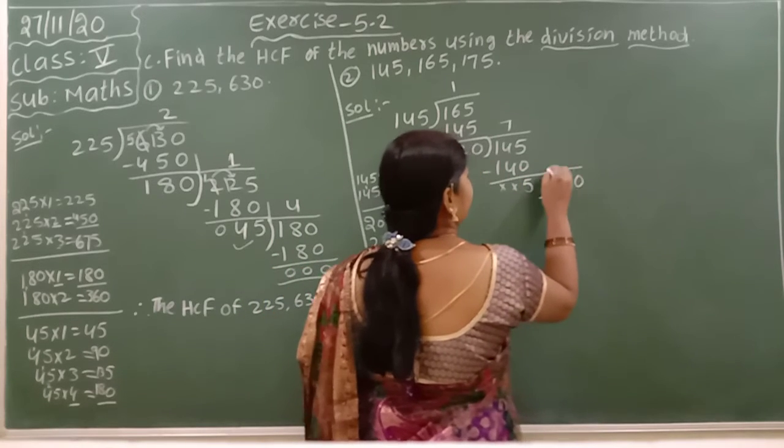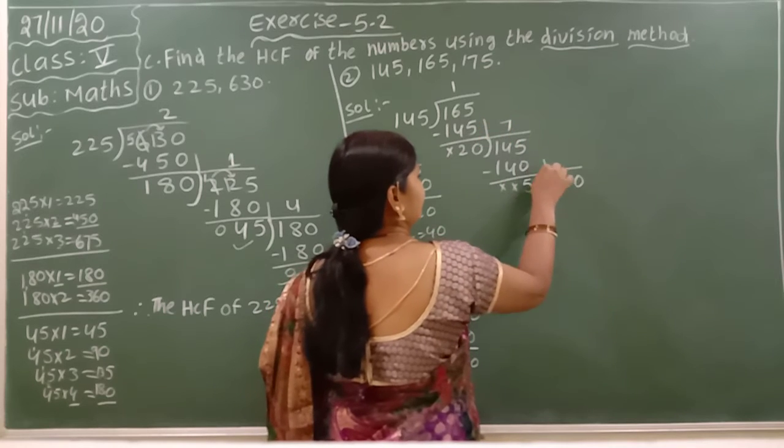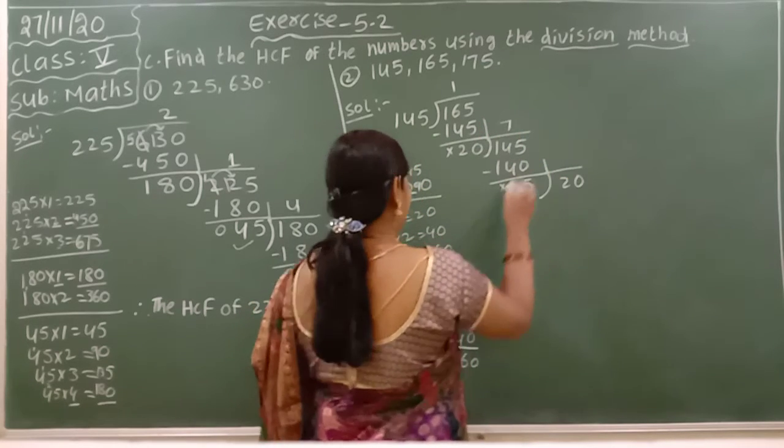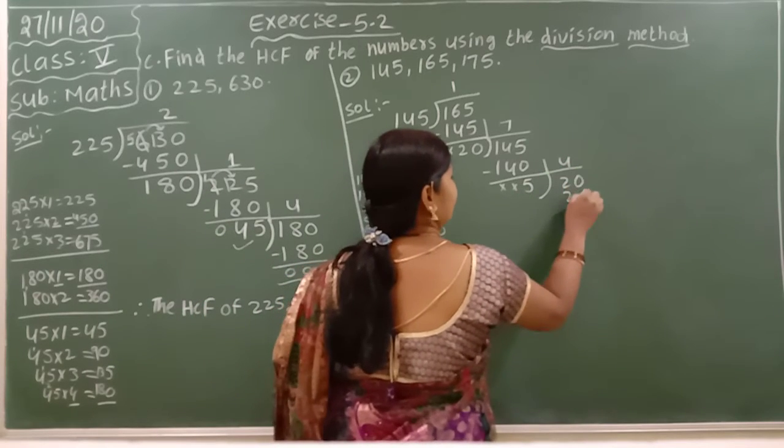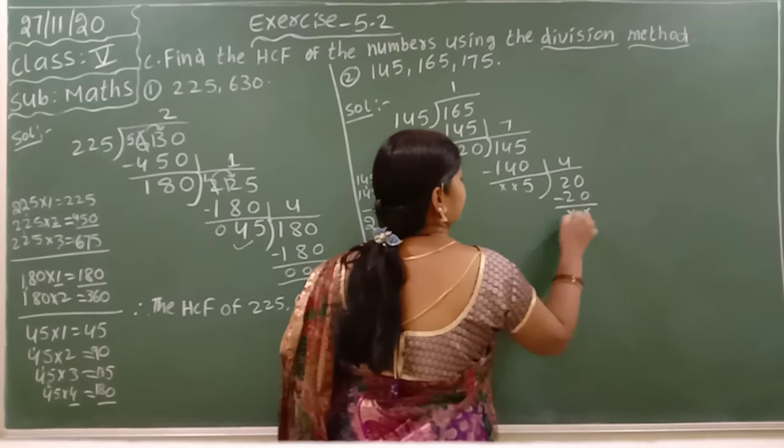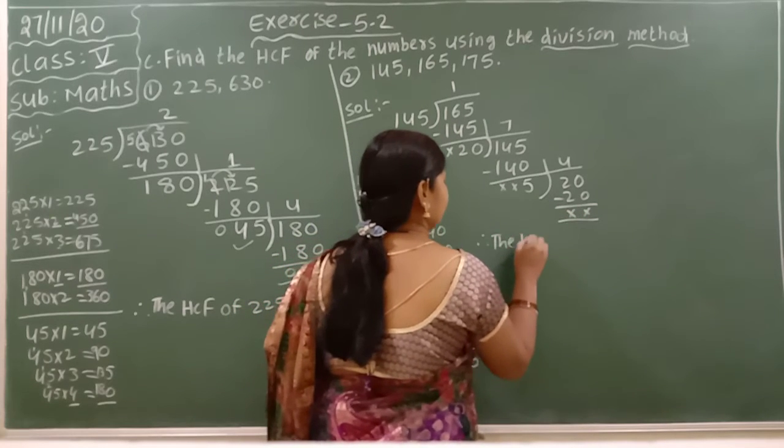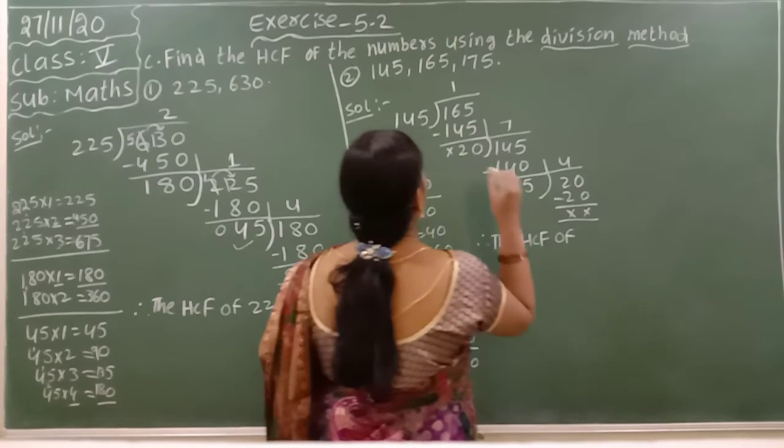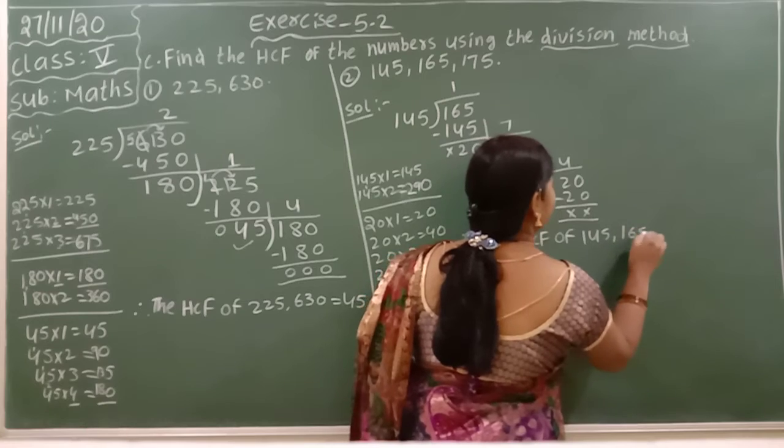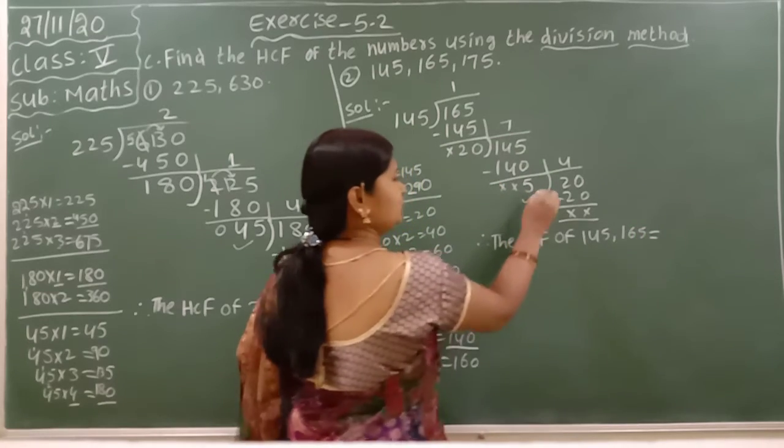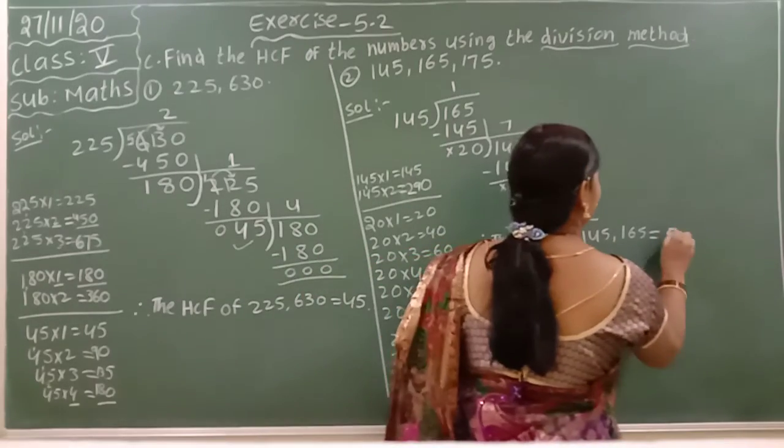Again do this with 20. 5 goes into 20 four times. Therefore, the HCF of 145 comma 165 is equal to this number, which should be taken as the HCF - that is 5.